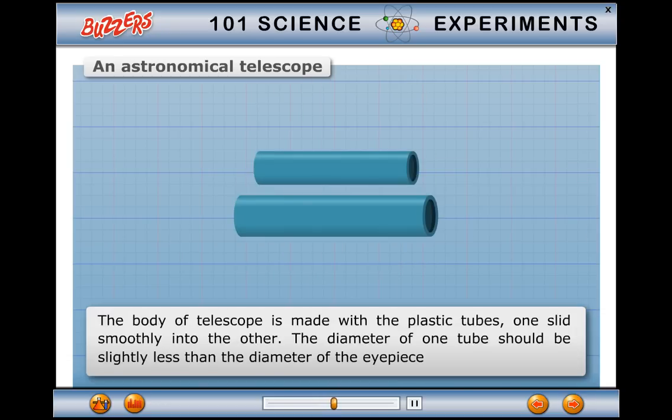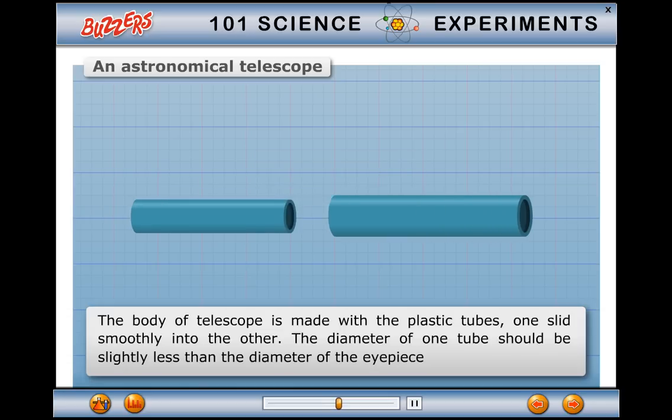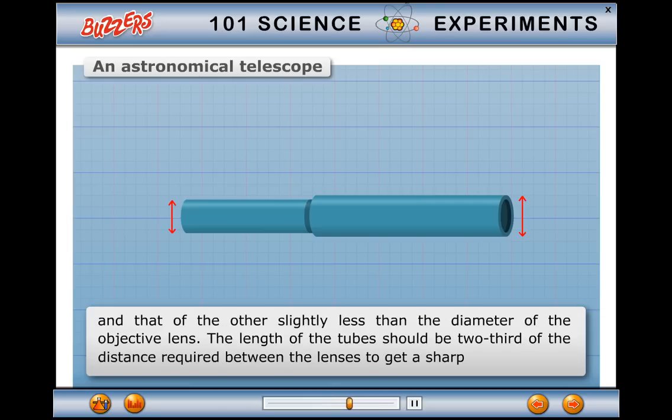Method: The body of telescope is made with the two plastic tubes. One slides smoothly into the other. The diameter of one tube should be slightly less than the diameter of the eyepiece and that of the other slightly less than the diameter of the objective lens.